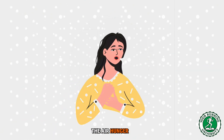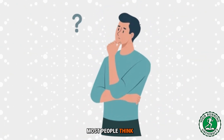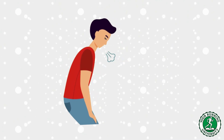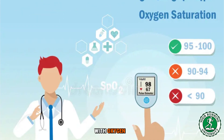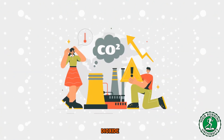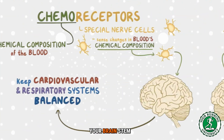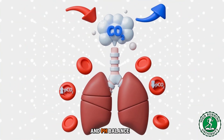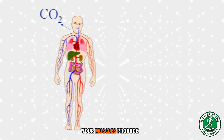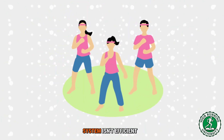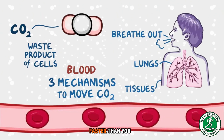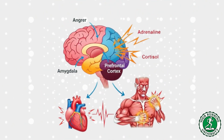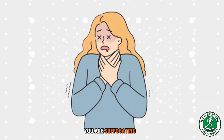Now let's address that panic feeling — the air hunger. Why do you gasp for air? Most people think: I am out of shape, I need more oxygen. False. You are not gasping because you lack oxygen — your blood is likely 98% saturated with oxygen. You are gasping because you have too much carbon dioxide, CO2. Your brain stem has sensors called chemoreceptors. These sensors are not focused on oxygen — they are obsessed with CO2 levels and pH balance. When you run continuously, your muscles produce CO2 as a byproduct of metabolism, and this CO2 builds up faster than you can exhale it. When CO2 hits a critical threshold, the chemoreceptors send a red alert signal to the amygdala — the brain's fear center. Your brain thinks you are suffocating and triggers a panic response.